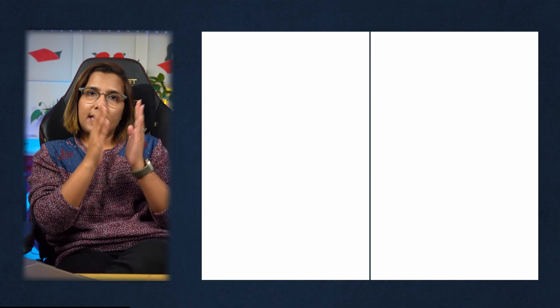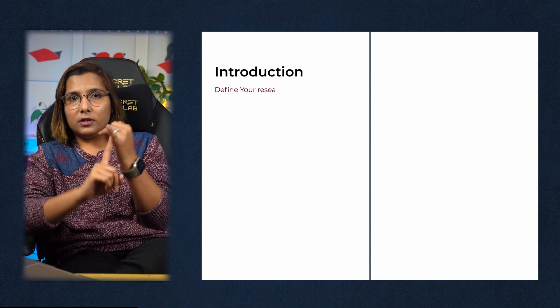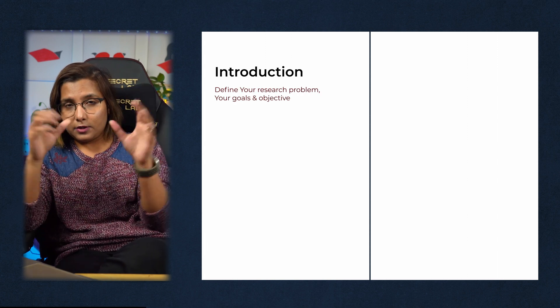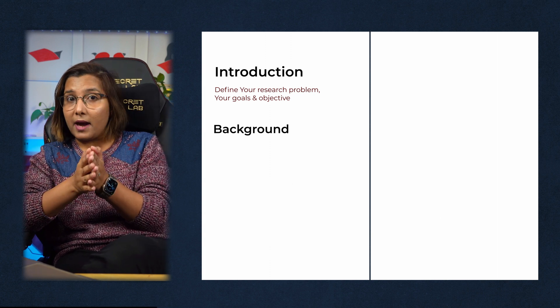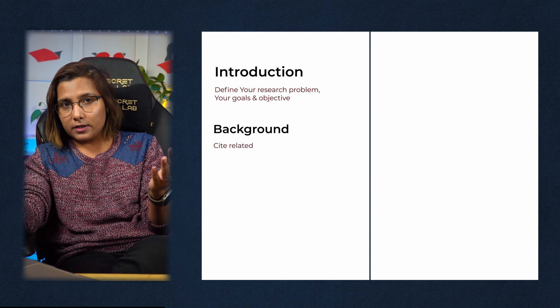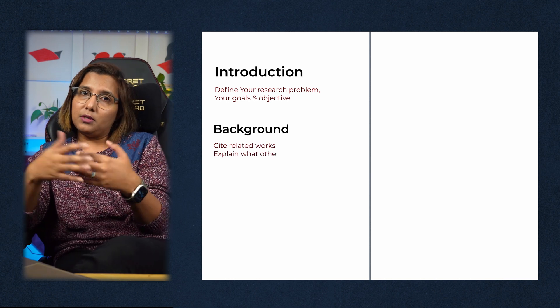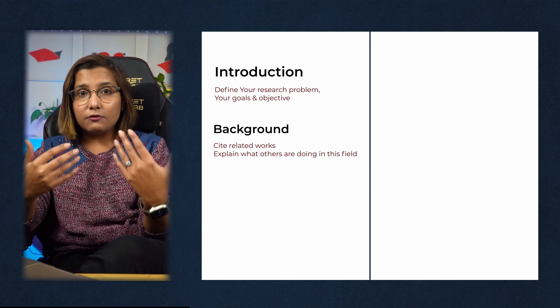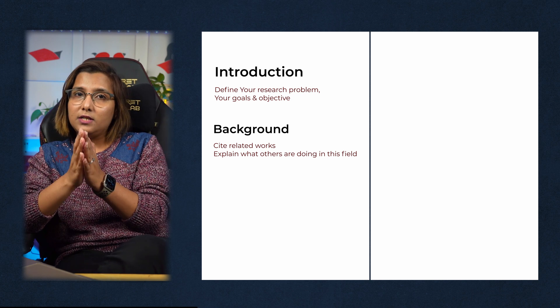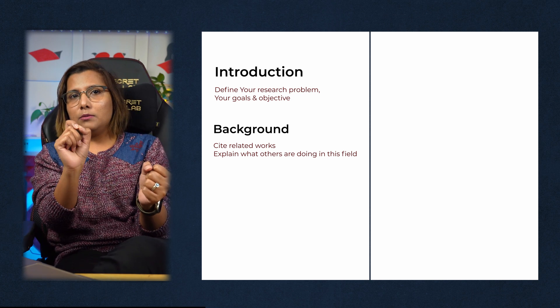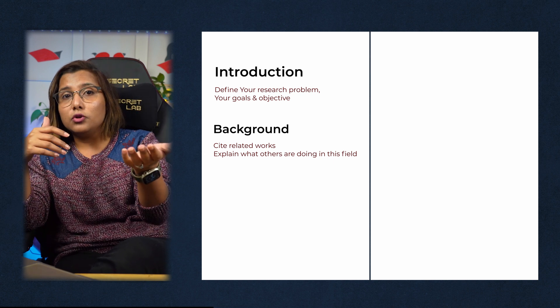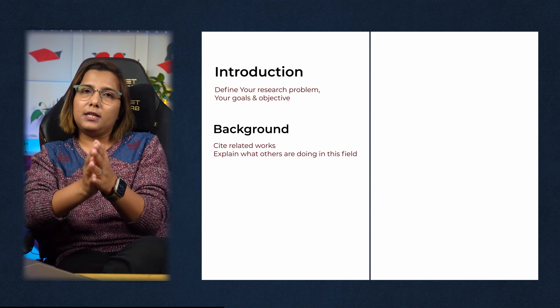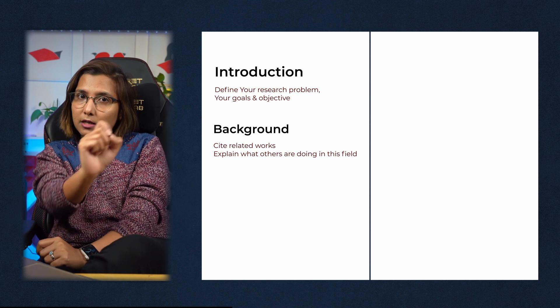For a research statement, here's an example structure you can use. Start with an introduction — define your research problem, goals, and objectives in your first paragraph. Then in your second paragraph, give a little background: cite related works and show how other people are approaching and solving the problem. This is your chance to demonstrate your research skills — show that you can find the most relevant, most up-to-date research in the field. Cite the most recent and most important work, and don't forget to use proper formatting, such as IEEE style or whatever is common in your field.